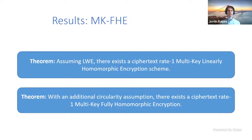We also show these results lift to the plain model with security against malicious adversaries, assuming simulation-extractable SNARKs. This incurs a polynomial blowup in the size of the second message but no other messages. Due to lower bounds for this setting, the protocol requires a minimum of four rounds.